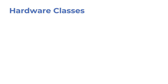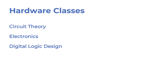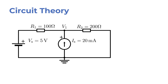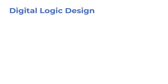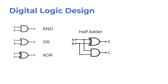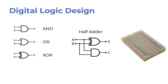Let's talk a bit about hardware classes: circuit theory, electronics, and digital logic design. Circuit theory was more of a physics class than computer science — I remember computing current and voltage at a particular junction in a circuit. Electronics and logic design was more interesting. We learned about using logic gates such as AND, OR, and EXOR to implement certain functions on a physical breadboard, such as an adder that adds two numbers.